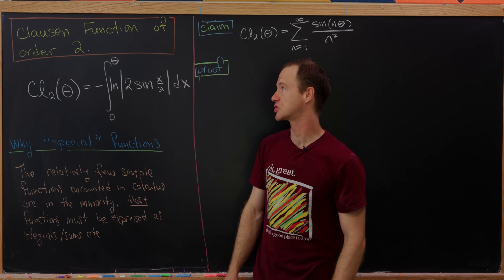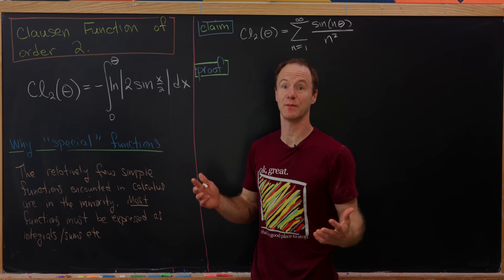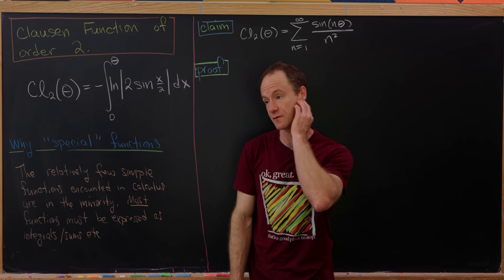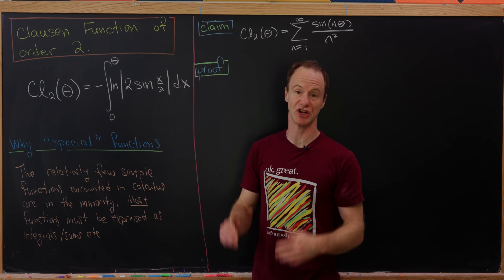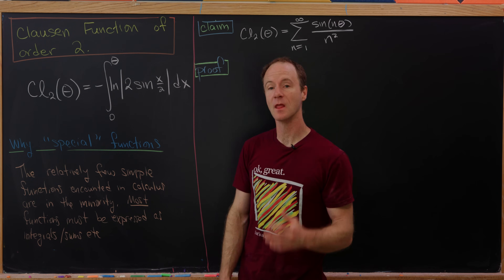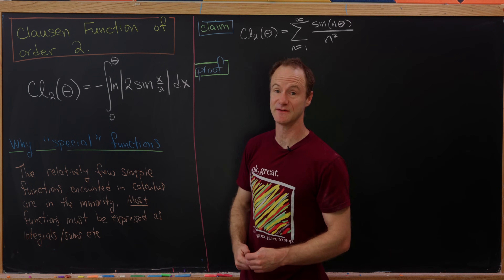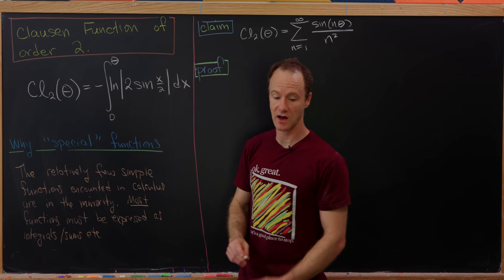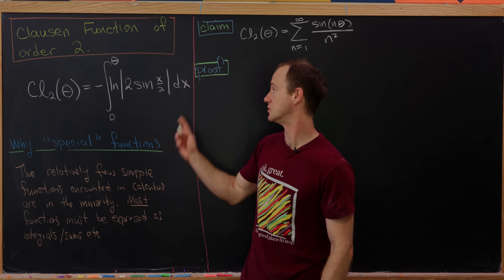Today we're going to look at a special function known as the Clausen function of order 2. Since it's called something of order 2, there must be ones of order 3, 4, 5, and so on. This function, denoted Cl sub 2 of theta, is defined as negative the integral from 0 to theta of the natural log of the absolute value of 2 sine(x/2) dx.